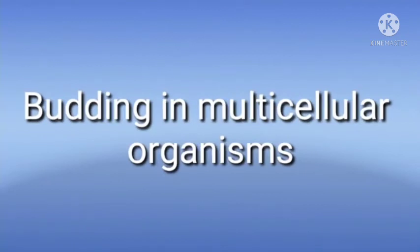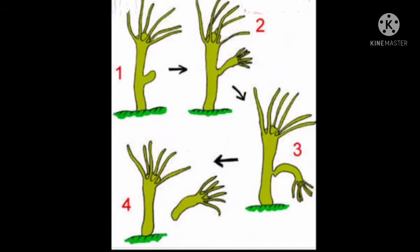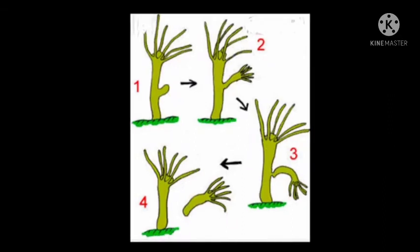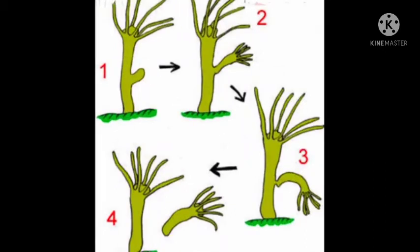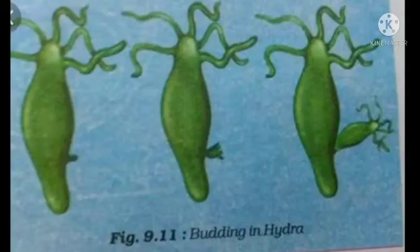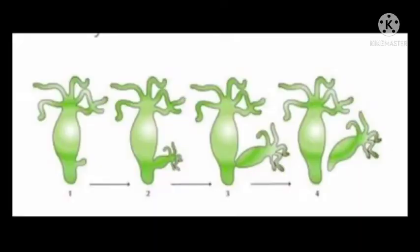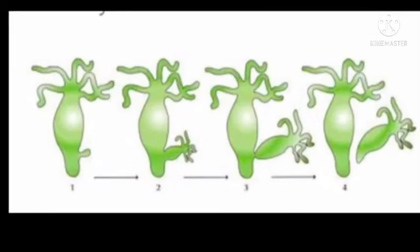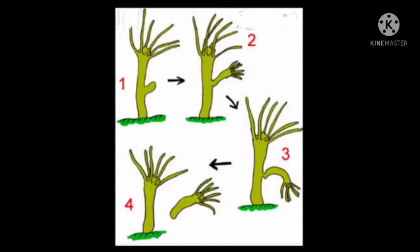Budding in multicellular organisms. Hydra is the best example for this budding. In case of Hydra, under favorable condition, at specific parts of its body, an outer growth is formed by repeated division of regenerative cells of body. This outgrowth is called as bud. Buds start growing progressively to form a small Hydra. Parent Hydra supplies nutrients to the small Hydra. Budding Hydra separate after parent Hydra and start to lead an independent life.